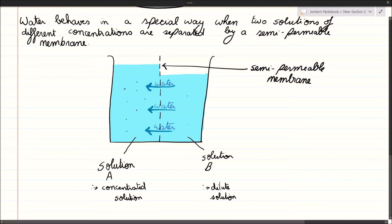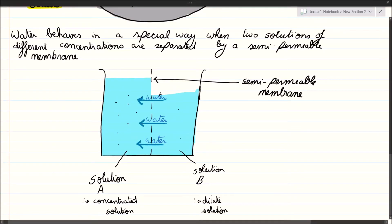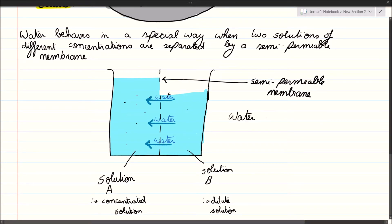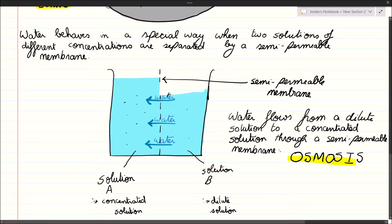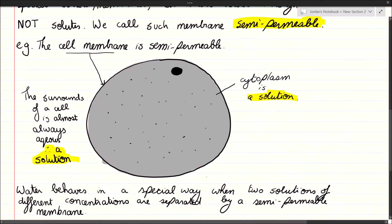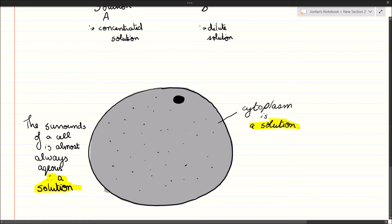What happens is that water molecules will go through the membrane from the dilute solution to the concentrated solution in a much greater number than those going in the opposite direction. This is osmosis. Water, when divided by a semi-permeable membrane with different concentrations on each side, will always move from a dilute solution to a concentrated solution. Osmosis is a special case of diffusion specific to water molecules — solutes cannot cross the semi-permeable membrane.